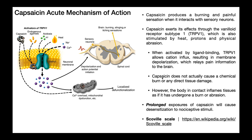Importantly, capsaicin itself does not actually cause chemical burns — it does not cause any direct tissue damage. But sometimes the body reacts as if it did, so you can actually get inflamed tissues in the area where the capsaicin contacted, as if it had undergone a burn. But the capsaicin itself does not actually burn the skin; it just appears that way sometimes if you have local inflammation where it contacted.